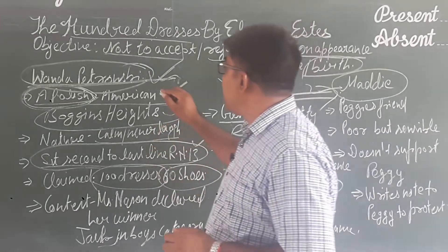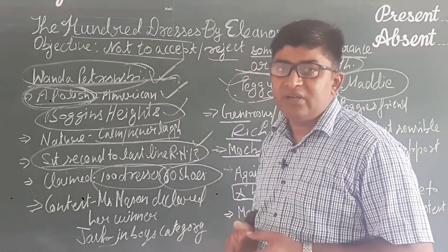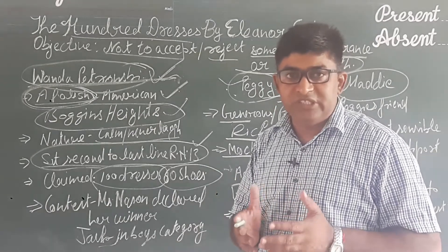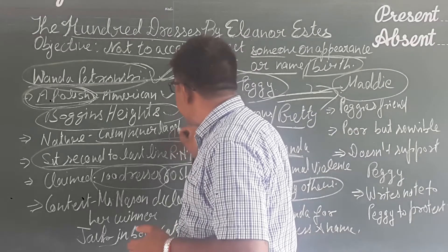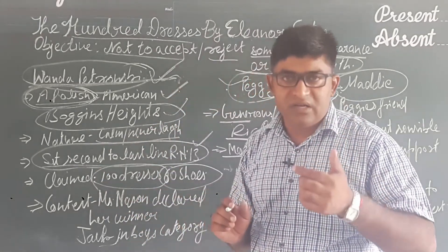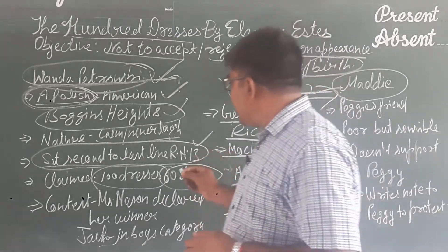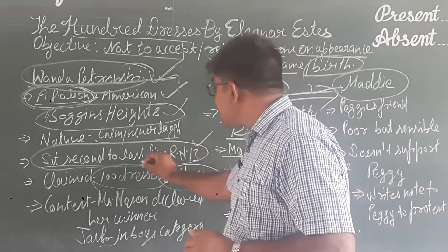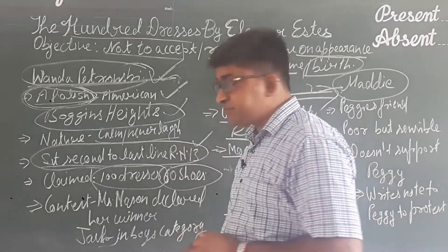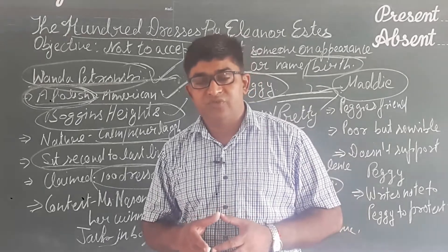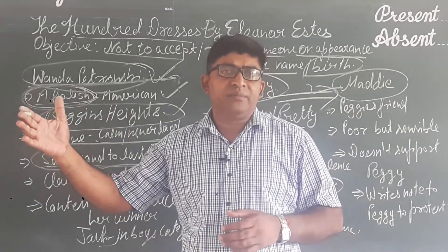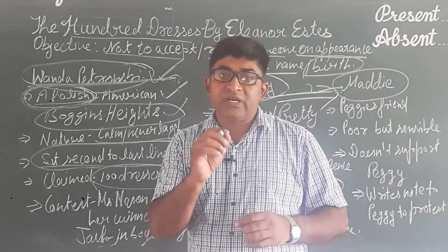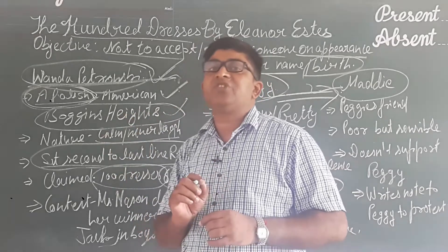That's why friends used to make fun of Wanda Petronsky's name. The girl was of very calm nature — she was always silent and she hardly talked to others. She could not be seen laughing; she would just make her face crooked and stop before laughing. The girl used to sit in the second last row of room number 13 because she came from streets full of mud and dust.